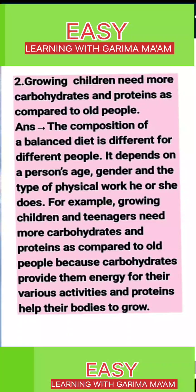2. Growing children need more carbohydrates and proteins as compared to old people. The composition of a balanced diet is different for different people. It depends on a person's age, gender and the type of physical work he or she does. For example, growing children and teenagers need more carbohydrates and proteins as compared to old people, because carbohydrates provide them energy for their various activities and proteins help their bodies to grow.